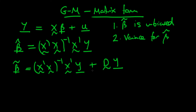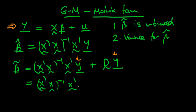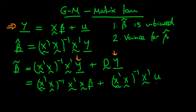We have to prove the conditions for which beta tilde is going to be unbiased. To do that, we substitute in our population model for y, so we can rewrite beta tilde as x-prime x to the power minus 1 times x-prime times (x beta plus u), plus x-prime x to the power minus 1 times x-prime u — substituting y in for that first half of the relationship.